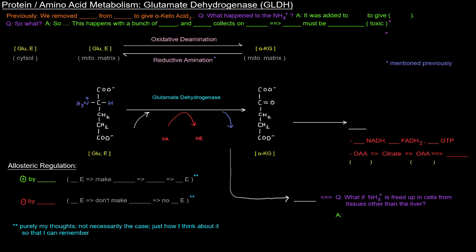Previously we talked about how we removed the ammonium ion or the amino group from amino acid number one to give alpha-keto acid number one via transamination. What happened specifically to that NH4+? It was added to alpha-ketoglutarate to give glutamate. So what? Why does this matter? Well, this happens with a bunch of amino acid number ones, and we're taking that NH4+ and adding it to alpha-ketoglutarate to give glutamate continually.